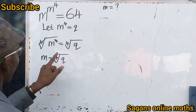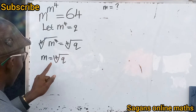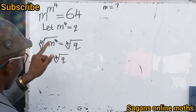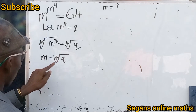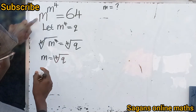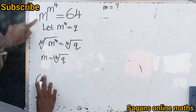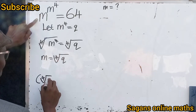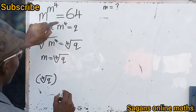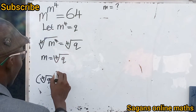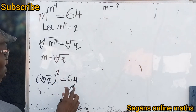Now let's go back to our question: m to the power of m raised to the power of 4 equals 64. We can see that m equals the 4th root of q, so in place of m we put the 4th root of q. The other part, m raised to the power of 4, we said equals q, and q equals 64.